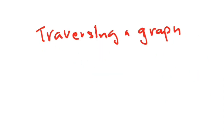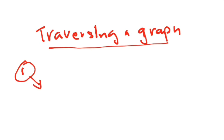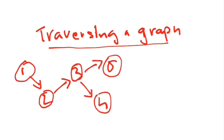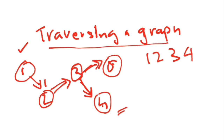For a graph, there are two traversal techniques: DFS and BFS. DFS means Depth First Search — you start from a node, print it, go to the next connected node, print it, and keep going deep in one direction. If you reach a node with no further connections, you backtrack and explore the next branch. In this way you print all the nodes.